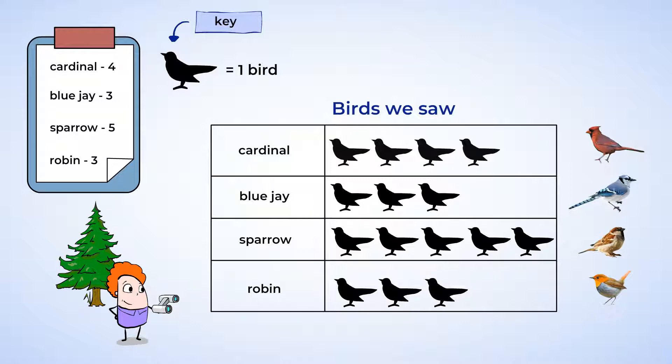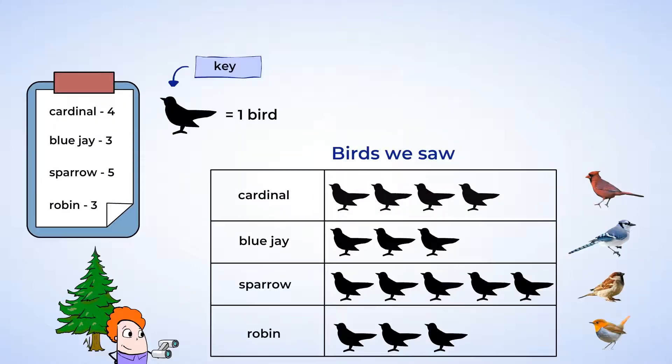Now that our data is organized, we can see that we saw the same amount of blue jays as robins, because the number of bird pictures in those two rows line up. Let's see what other animals the kids have seen on our nature walk.